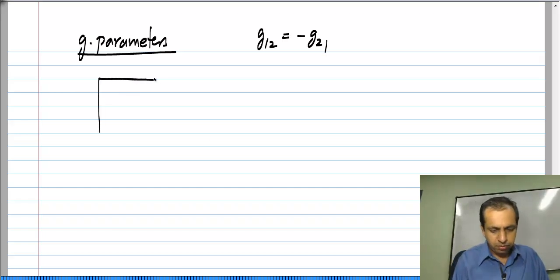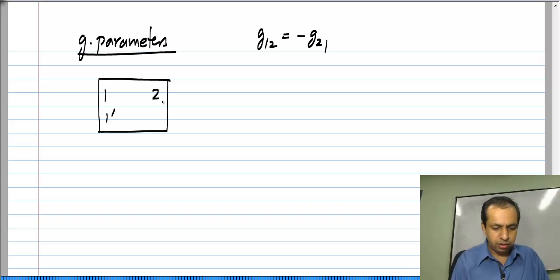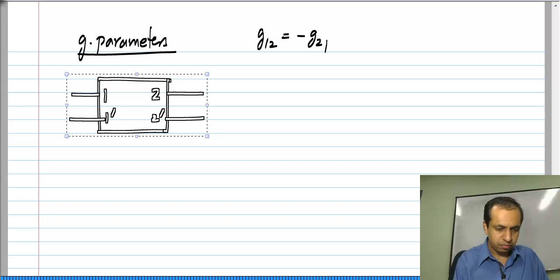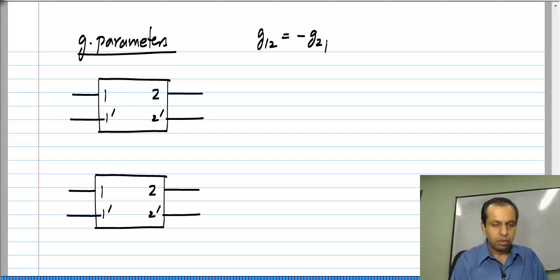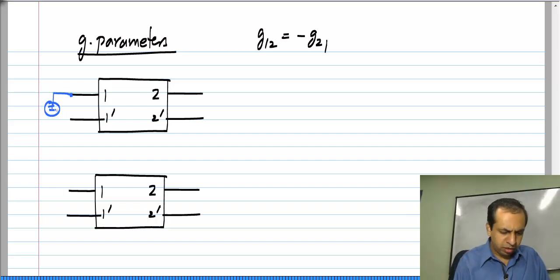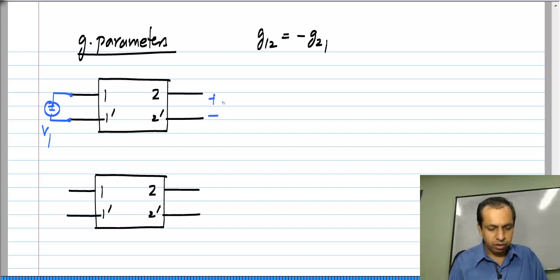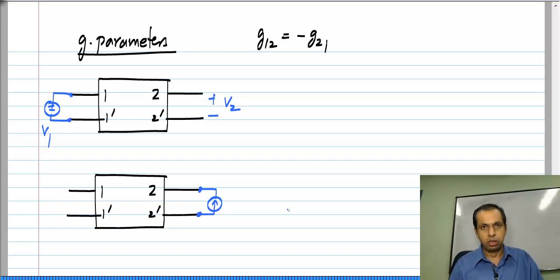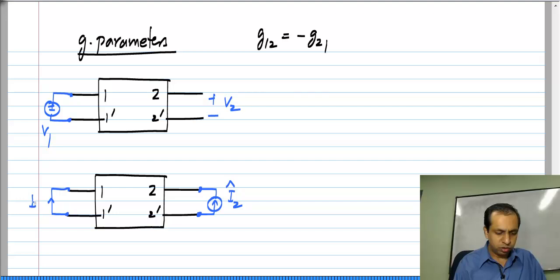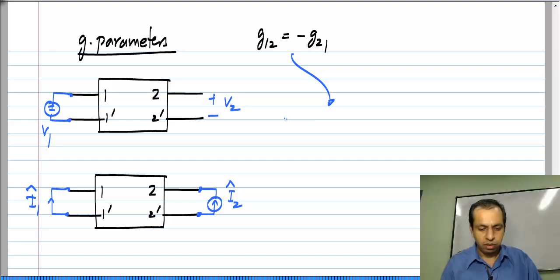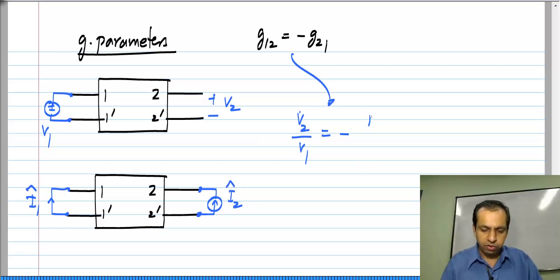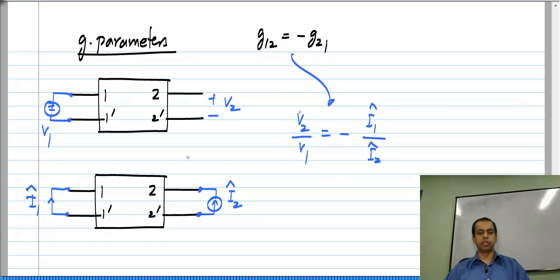G12 is minus G21 for the two-port. When measuring G21 you will apply a voltage to port 2 and measure the short-circuit current through port 1. This implies that the voltage gain from port 1 to port 2, measured with an open-circuit termination, equals the negative of the current gain from port 2 to port 1, which is measured with a short-circuit termination.